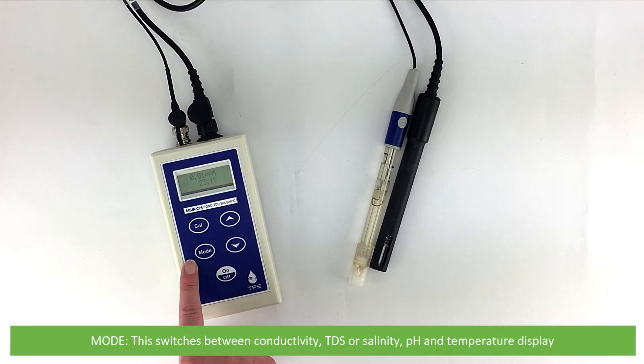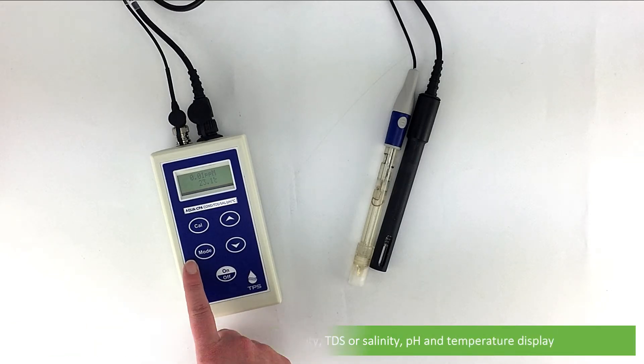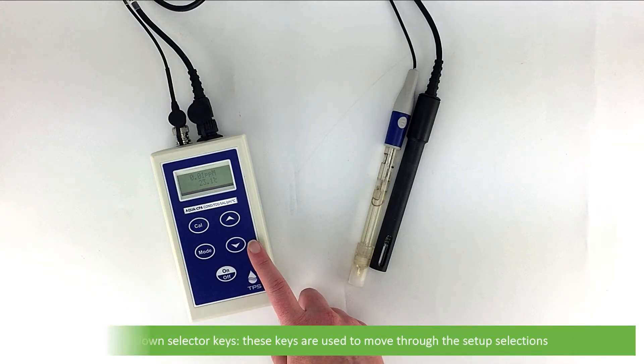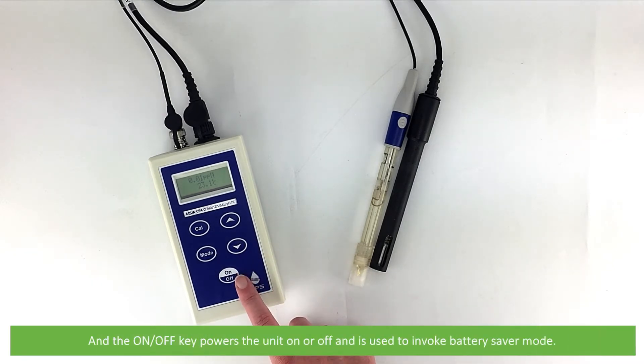Mode switches between conductivity, TDS, salinity, pH and temperature display. Up and down selector keys are used to move through the setup selections, and the on-off key powers the unit on or off and is used to invoke battery saver mode.